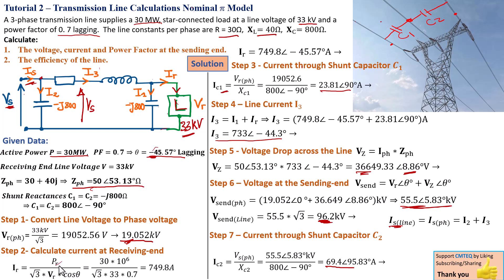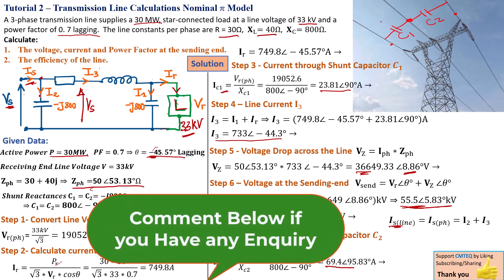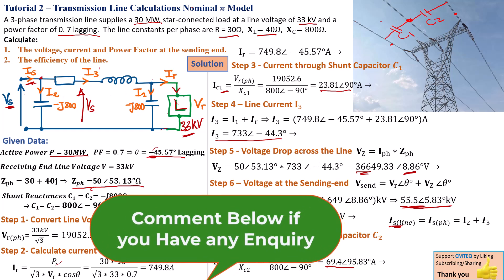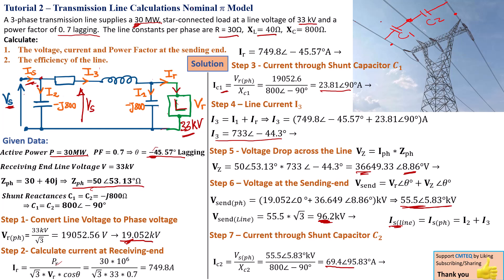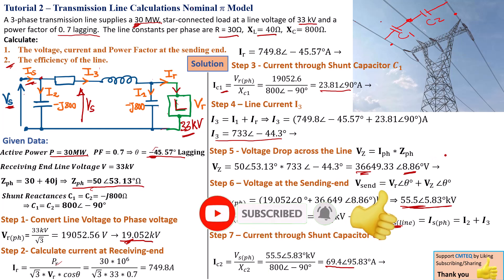There is a trick in finding the power factor at the sending end — you need to use the angle of the sending end current. Let me know in the comments if you get it right. After finding the sending end power, divide the receiving end power of 30 megawatt by the sending end power to get the efficiency of the line. I'll stop here — if you attempt to find the final efficiency, let me know in the comment section. If you find this tutorial useful, please give it a thumbs up and share it. Until next time, stay tuned to SimTech channel. Cheers.